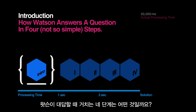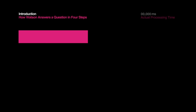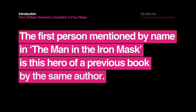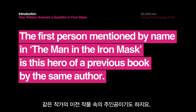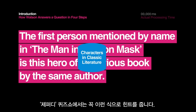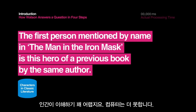How Watson Answers a Question in Four Not-So-Simple Steps. The first person mentioned by name in The Man in the Iron Mask is this hero of a previous book by the same author. This is a typical Jeopardy! clue, presented in the tricky Jeopardy! format that can be pretty difficult for a person to understand.